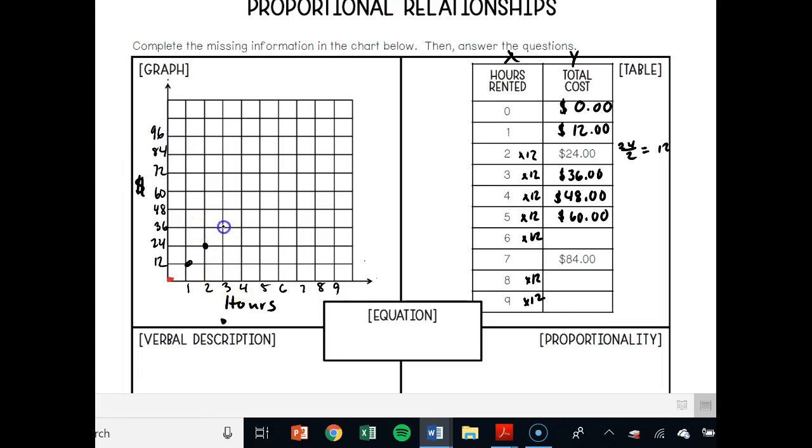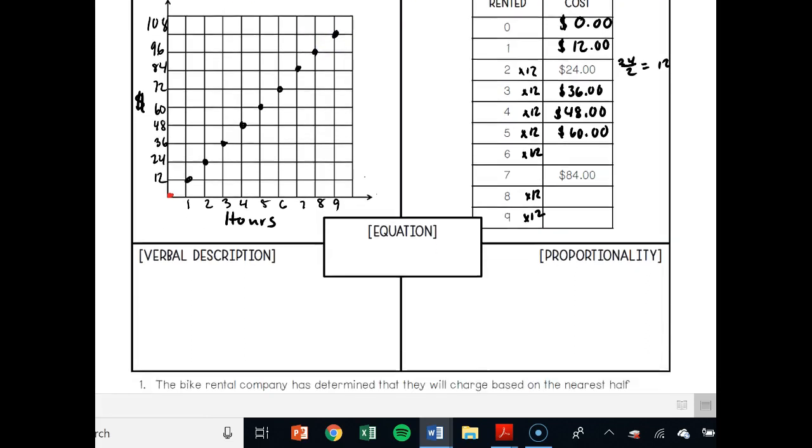So for 3 hours it should be 36. For 4 hours it should be 48. For 5 hours it should be 60. For 6 hours it should be 72. 7 hours, 84. 8 hours, 96. And 9 hours, 108. So then you take your ruler and you draw a straight line through that proportional graph.